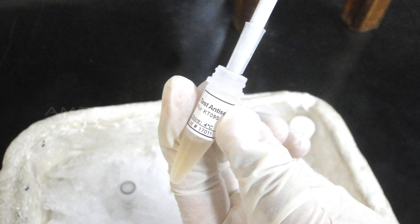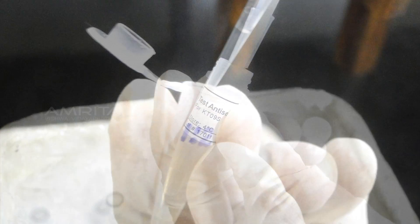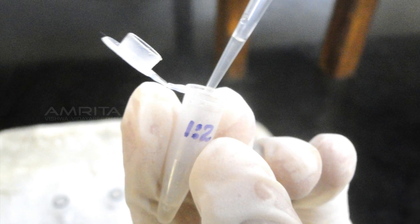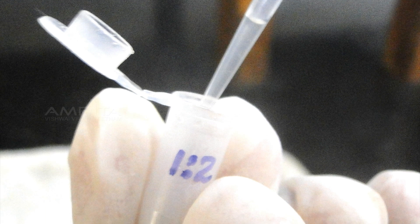Add 20 μL of test antiserum into the first vial and mix well. The dilution of antiserum in this vial is 1:2.